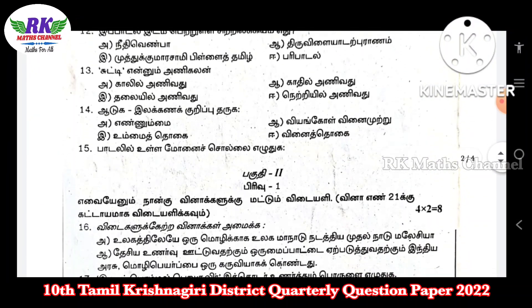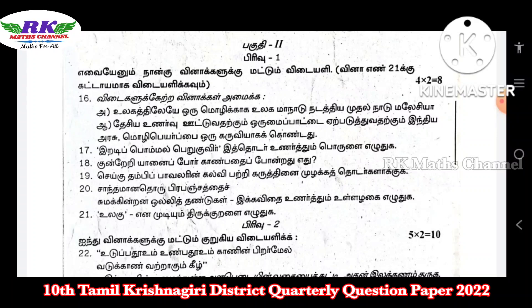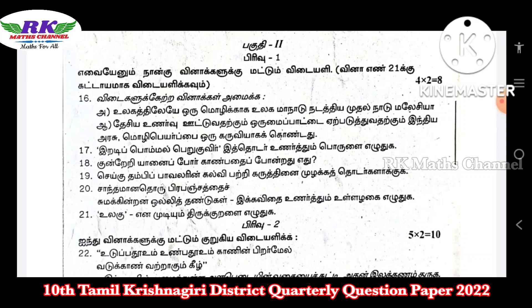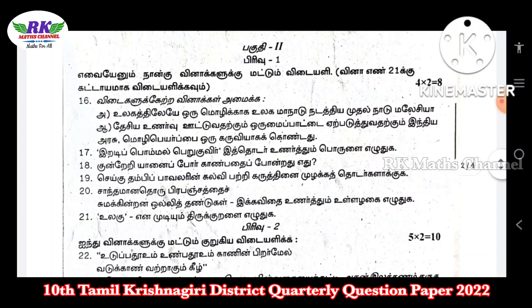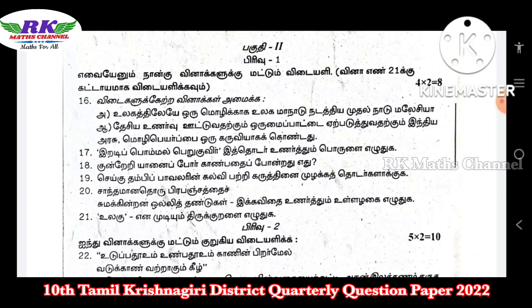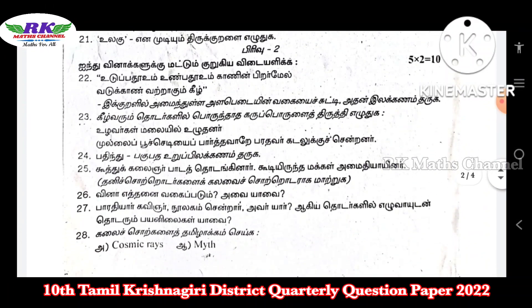In the course there are 15 bits. You can do Part 2, Section 1 — a total of 4 questions, 4 times 2 are 8 marks. There are 6 questions and you have to write 4. Question number 21 is a compulsory question. Next, Section 2 — you have to write 5 questions, so 5 times 2 are 10 marks.